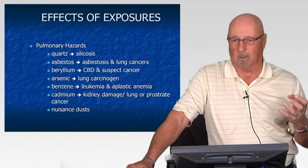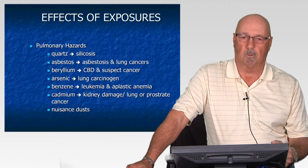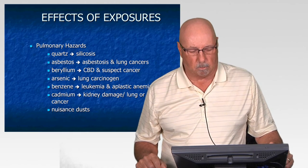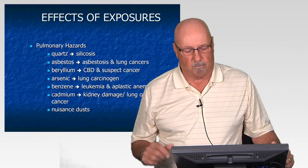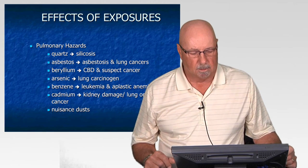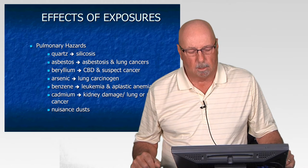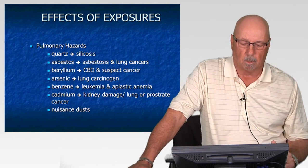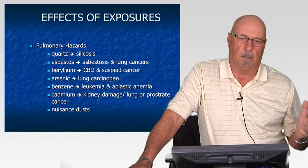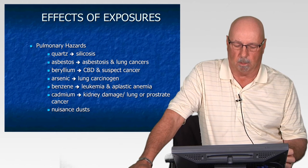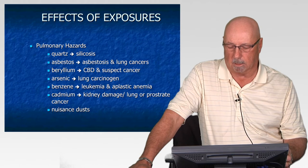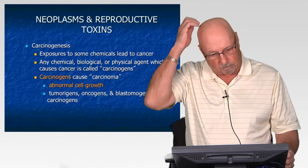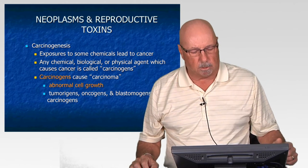Asbestos can also cause actual lung cancer — a tumor growth — and mesothelioma, a cancer of the lining of the respiratory tract and abdominal system. Beryllium is a suspected cancer-causing substance, though studies are still ongoing. Arsenic can cause lung cancer. Benzene is well documented as causing leukemia and aplastic anemia. Cadmium can cause kidney damage as well as lung and prostate cancers. A variety of different dusts can also cause respiratory distress to exposed individuals.